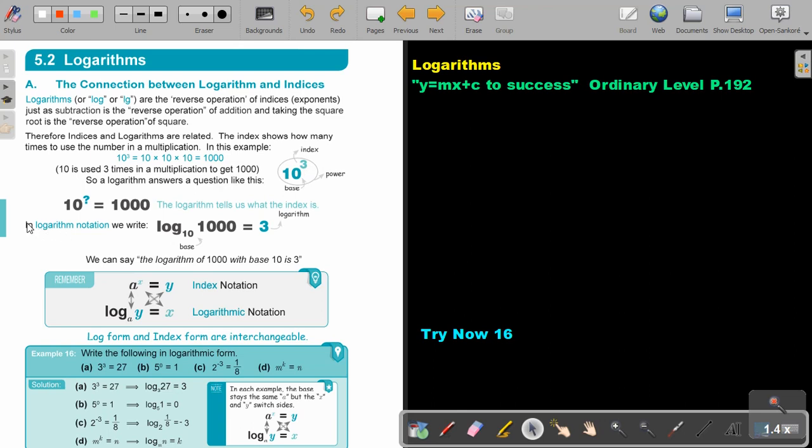How do we write it? In logarithm notation we write log. We move that base down. Now if it's a 10, you don't have to write it, but we will come to that. Then a thousand is equal to 3. If you take your calculators, your school calculators, it's programmed with a base of 10. And you just press log a thousand. You will get 3. So we say the logarithm of a thousand with the base of 10 is 3.